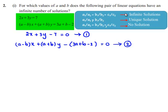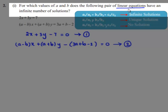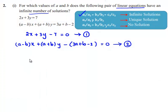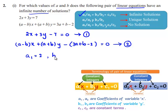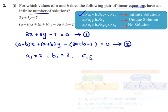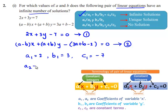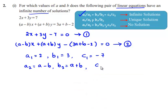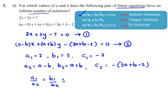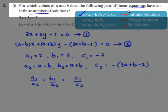According to the given condition of the problem, the given pair of linear equations have an infinite number of solutions. So let us apply the condition: a1 by a2 equals b1 by b2 equals c1 by c2, because the given set of linear equations have an infinite number of solutions.